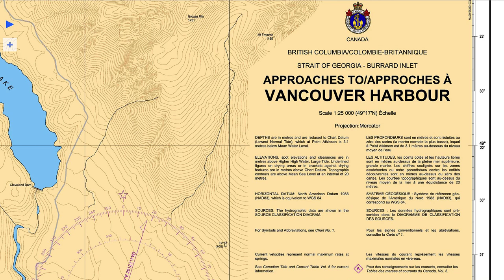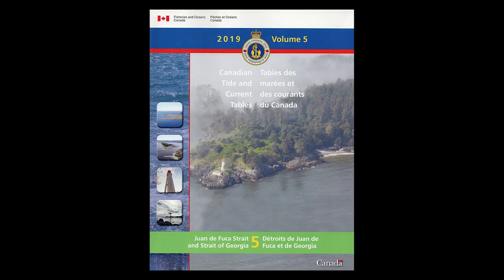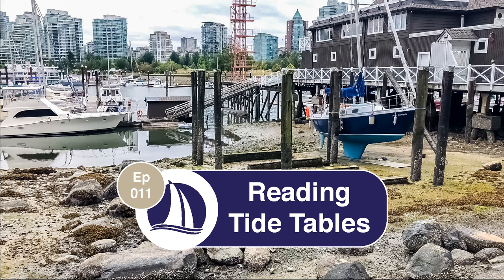One of the only symbols included in the title block that can also be found in chart number 1 is this A in a diamond. You will find the symbol on a chart where there is tabulated tidal stream data, specifically tidal currents. In this example, it further states that you can find that information in Volume 5 of the Canadian Tide and Current Tables. Make sure to use tide tables for tides, which represent vertical movement of water or depth, and current tables for horizontal movement or flow. For more on tide tables, please refer to my video on reading tide tables.